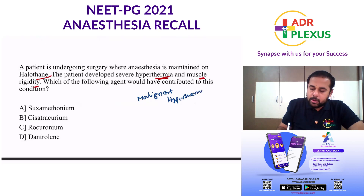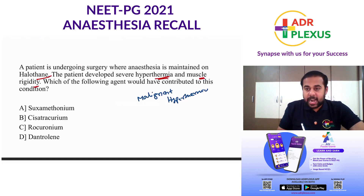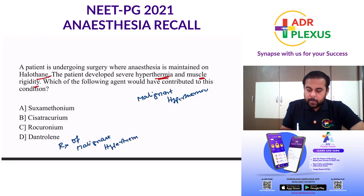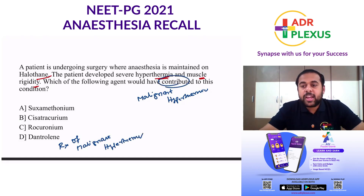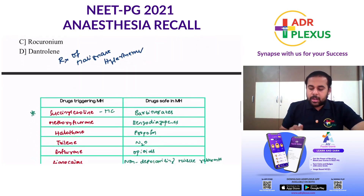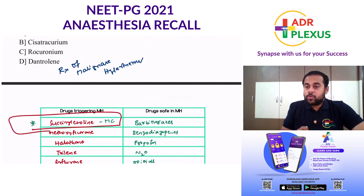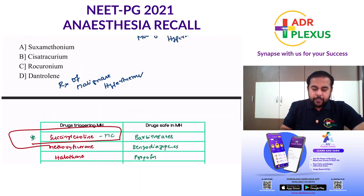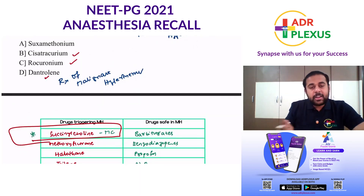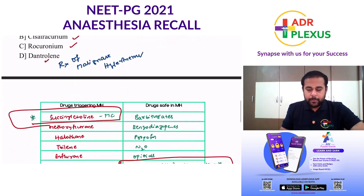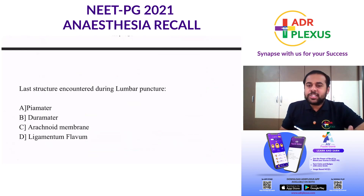We discussed this during succinylcholine and also the drugs which commonly trigger malignant hyperthermia. The options are succinylcholine, cisatracurium, rocuronium, and dantrolene. Dantrolene is actually the treatment for malignant hyperthermia. They asked which drug would have contributed in addition to halothane. Non-depolarizing muscle relaxants like cisatracurium and rocuronium are safe. Dantrolene is a treatment. So even by eliminating, you can go with succinylcholine as the answer.